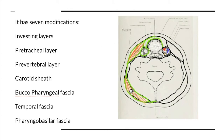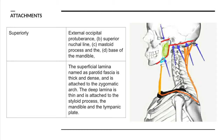It's the most superficial layer, completely encircling the neck. Looking at its attachments vertically, it extends superiorly from the external occipital protuberance, goes to the superior nuchal line, mastoid process of the temporal bone, and finally to the base of the mandible. So its superior limits are the external occipital protuberance, superior nuchal line, mastoid process, and base of the mandible.